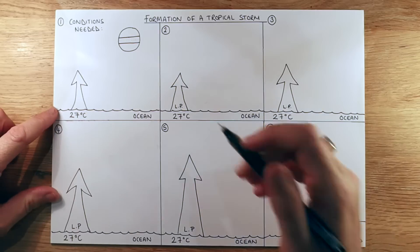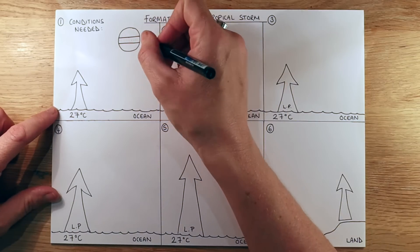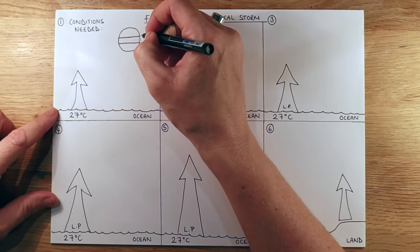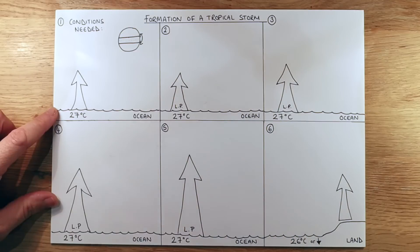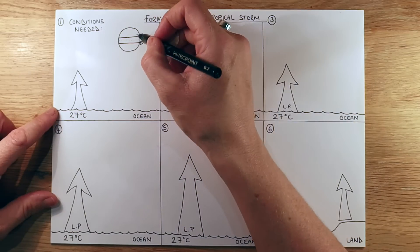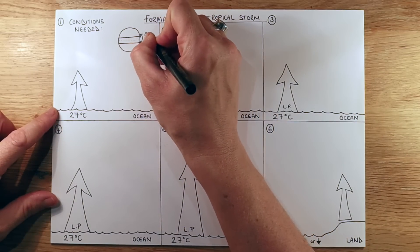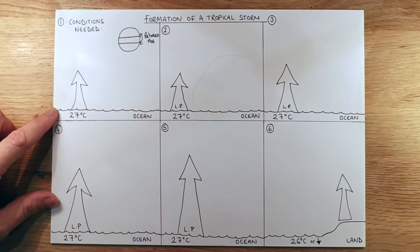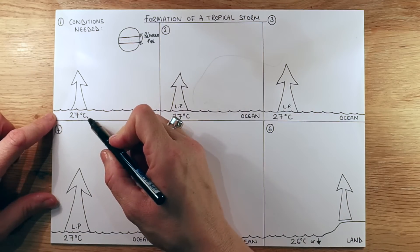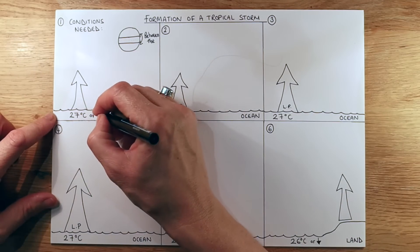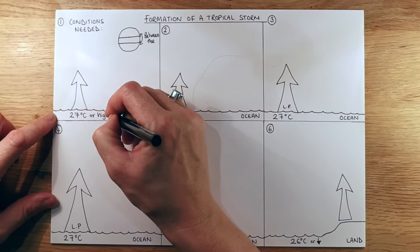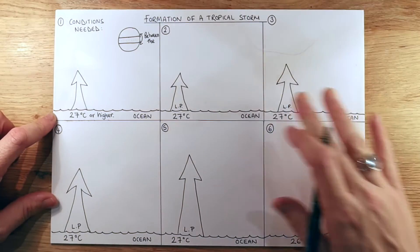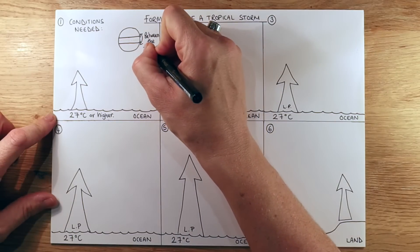To begin with — please excuse my rudimentary drawing — this is the earth and the dots are the equator. Tropical storms basically happen between the tropics, and that's because the ocean temperature in that area is at least 27 degrees Celsius, sometimes higher. It needs to be at least 27 degrees for a tropical storm to form.